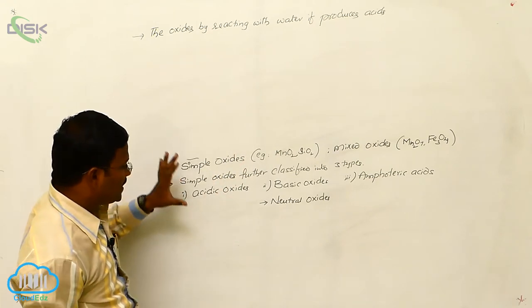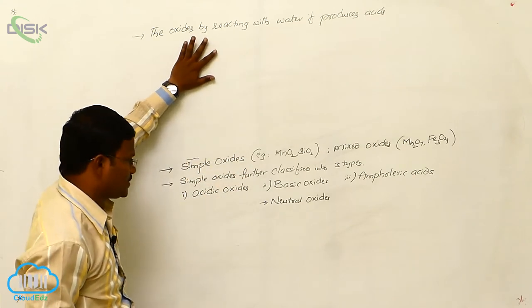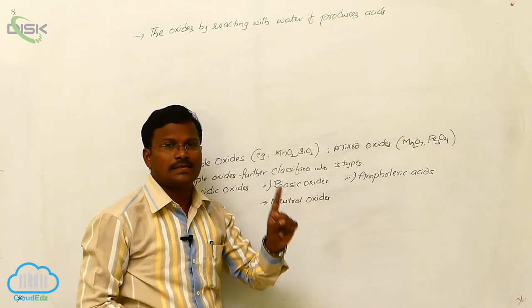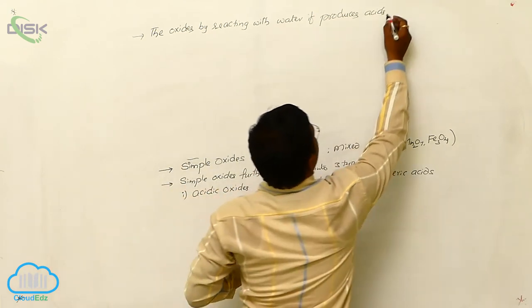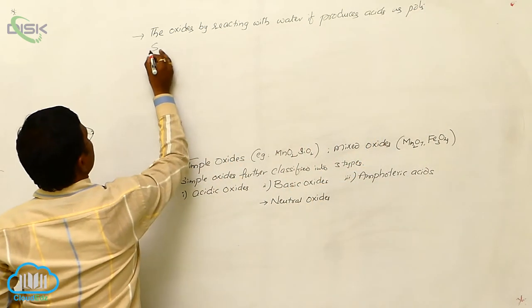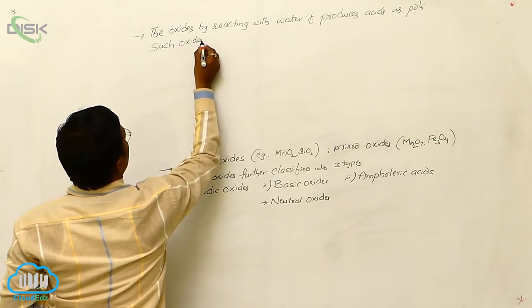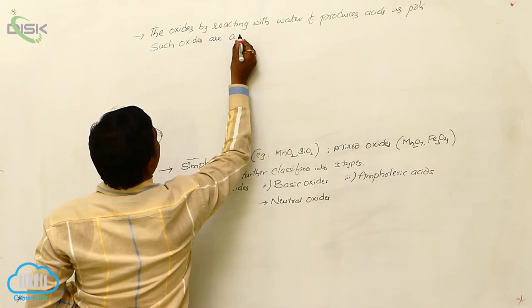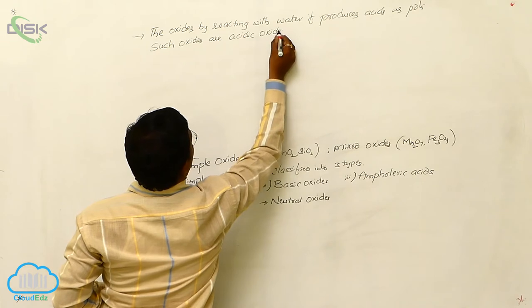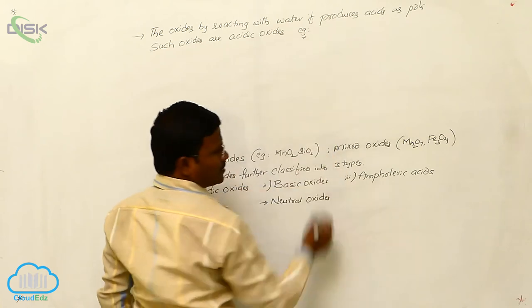What are acidic oxides here? The definition to identify which are acidic oxides, we have to follow one statement. Those oxides, by reacting with water, if they produces acids as products. Such oxides are acidic oxides.